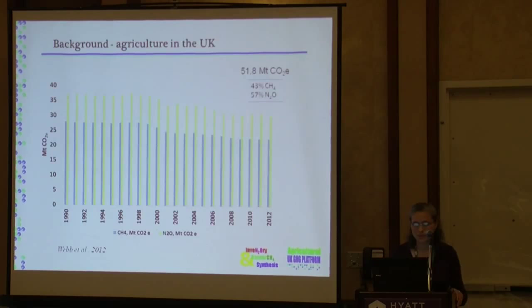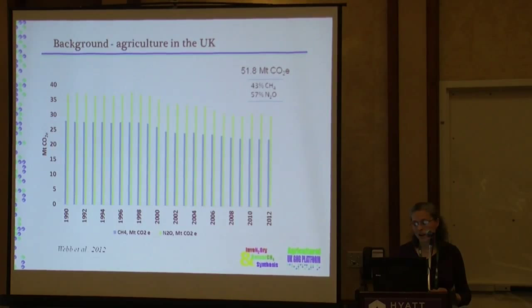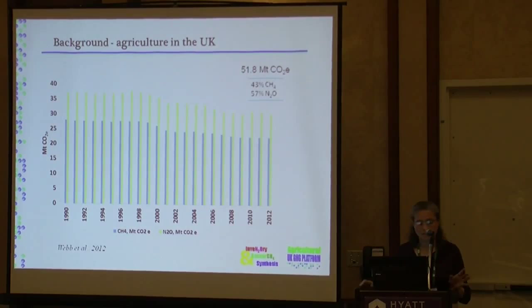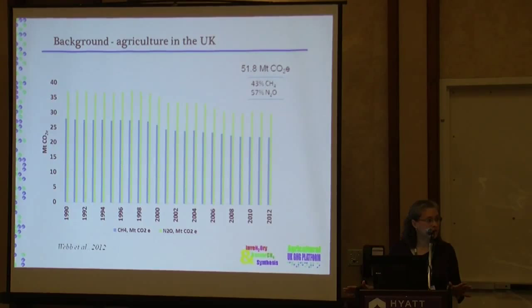Agriculture in the UK contributes about 8% of greenhouse gases. After 2012, there was a trend of a decrease in emissions, the majority from nitrous oxide, based on the 1996 guidelines. We are now moving to the 2006 guidelines, so the picture changes a little bit. But the important thing I want to show here is that this methodology is based on IPCC defaults.